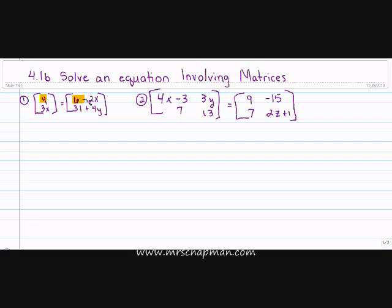I have a 4 and it's equal to 6 minus 2x. Notice it's in the corresponding positions. I have 4 equals 6 minus 2x and my second equation is 3x equals 31 plus 4y. We are solving systems of equations here. All we did was remove the brackets for the matrices and we made sure the corresponding positions were equal to each other.